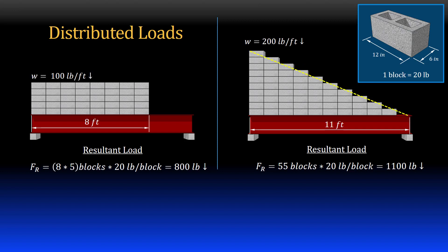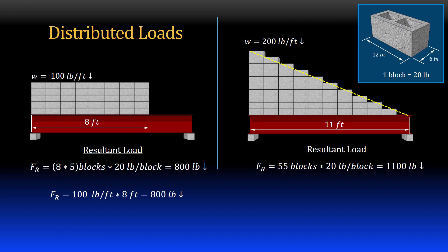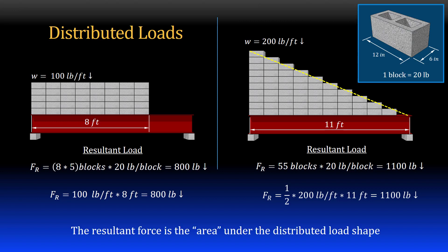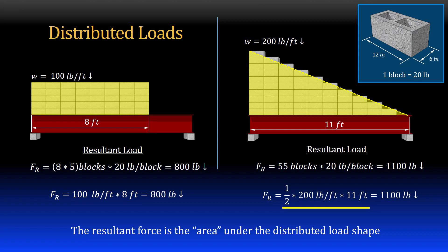Let's calculate the resultant loads again but this time using the distributed load magnitude. For the beam on the left, the uniform distributed load is 100 pounds per foot. The magnitude of the resultant of a uniform distributed load is the load times its length — 100 lb/ft times 8 feet gives the same resultant of 800 pounds acting downward. For the beam on the right, the linearly distributed load has a magnitude of 200 pounds per foot. The resultant force is one-half times 200 pounds per foot times 11 feet, giving 1,100 pounds acting downward. The resultant force is simply the area under the distributed load shape: height times length for a uniform load, or one-half times height times length for a triangular load.